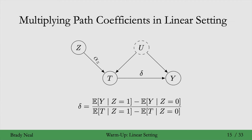The linear setting can give us some useful intuition for instrumental variables. The causal association that flows along a directed path in the linear setting is just the product of coefficients along that path, where the coefficients on these edges denote the coefficients in front of the parent in the structural equation that generates the child. So delta is in front of t in the structural equation for y, and alpha z is in front of z in the structural equation for t. We're going to multiply some coefficients along these paths and show how that gives us intuition for instrumental variables.